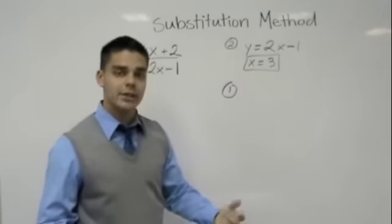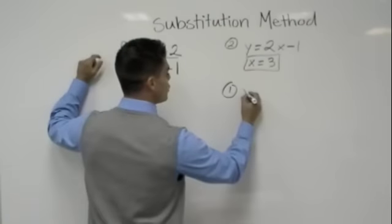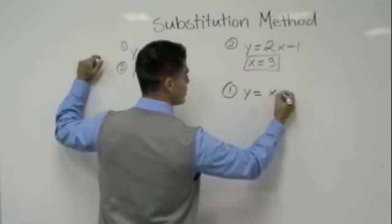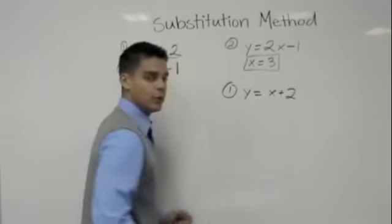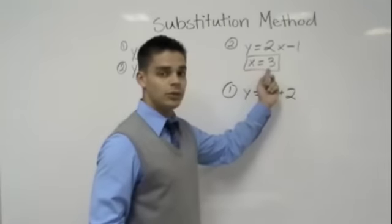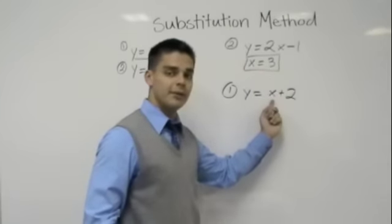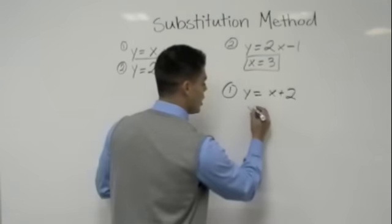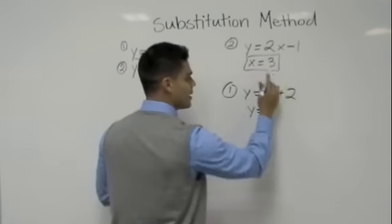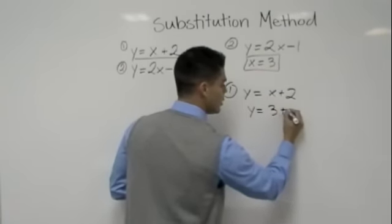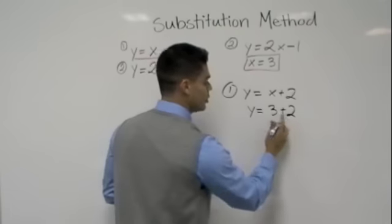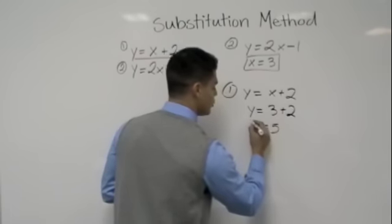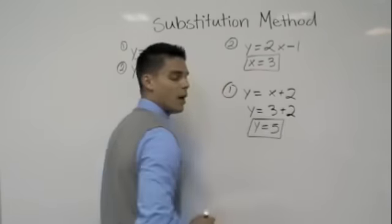So I take my equation 1 and I always like to rewrite it. And what am I going to do now? I have x = 3. So plug that in for x. So we get y is equal to what is x? x is 3 plus 2. 3 + 2 gives me 5. Therefore, I was able to solve for y.